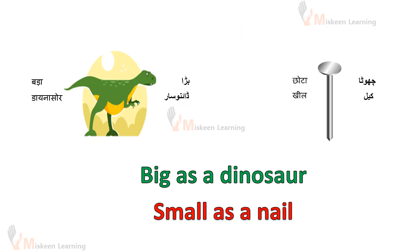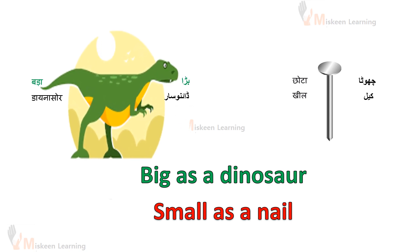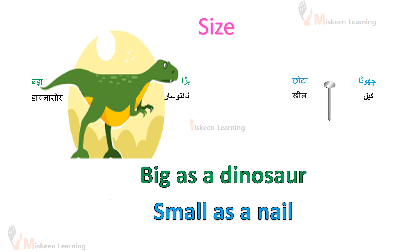Big as a dinosaur — dinosaur ki tira bhoat bada. Small as a nail — eek neel ki tira bhoat thota. Yahaan haam koonse feature ka comparison kerrehe hai? Size ki comparison kerrehe hai — we are comparing size here.